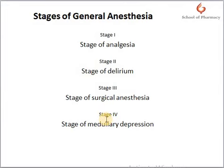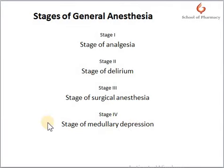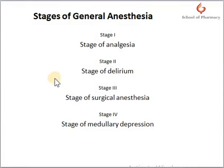The fourth and last stage is the stage of medullary depression. When this stage occurs, it is because an overdose of the anesthetic has brought the patient to this stage. Respiratory and circulatory failure occurs at this stage, which is very harmful. That is why anesthetists always pre-calculate the drugs or agents used for surgery, as the dose is not the same for all patients — it depends person to person.